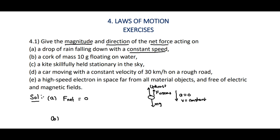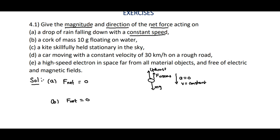Coming to B: a cork of mass 10g floating on water. Here also F_net is equal to 0, because the weight acting downwards is balanced by the upthrust acting upwards. So overall, F_net is equal to 0.